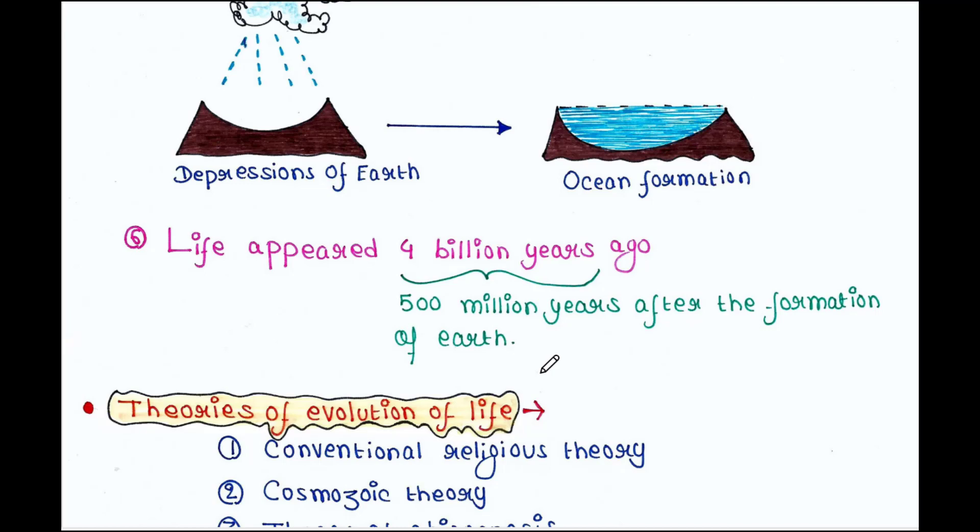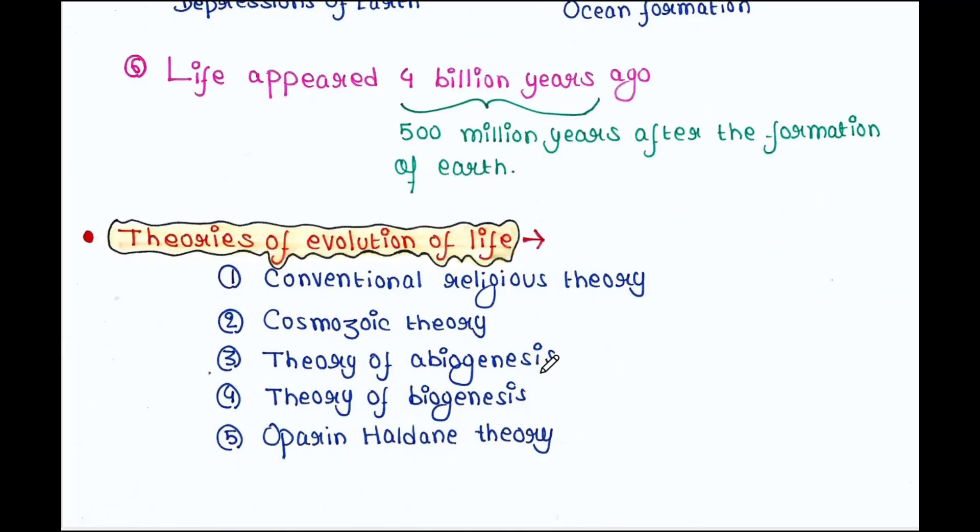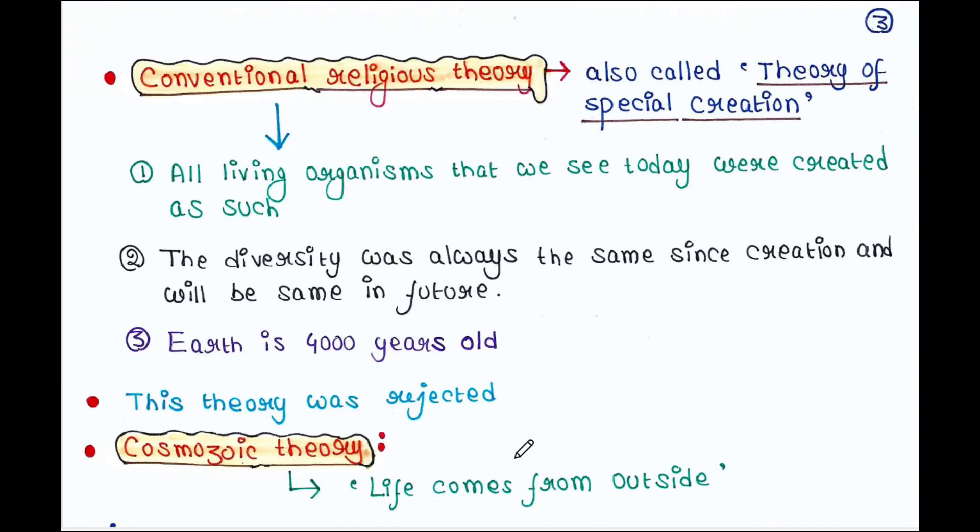There are different theories regarding evolution of life, such as conventional religious theory, cosmozoic theory, theory of abiogenesis, theory of biogenesis, Oparin and Haldane theory, etc. We will talk about them one by one. First, let's talk about conventional religious theory.